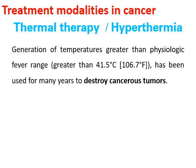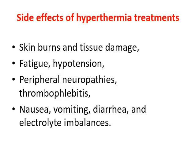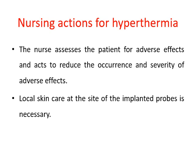Thermal therapy (hyperthermia): generation of temperatures greater than the physiologic fever range — greater than 41.5°C — has been used for many years to destroy cancerous tumors. Treatment can be local, regional, or whole-body hyperthermia depending on the extent of the area being treated. Side effects of hyperthermia include skin burn and tissue damage, fatigue, hypotension, peripheral neuropathy, thrombophlebitis, nausea, vomiting, diarrhea, and electrolyte imbalance. Nursing action: the nurse assists patients for adverse effects and acts to reduce their occurrence and severity; local skin care at the site of implanted probes is necessary.